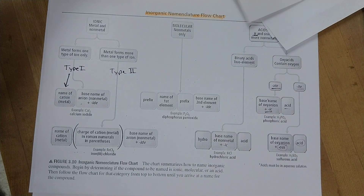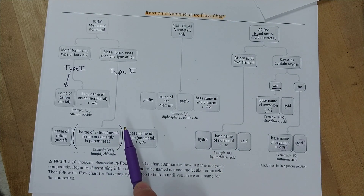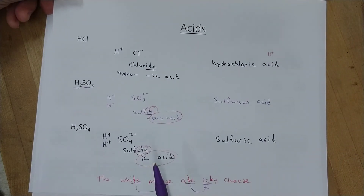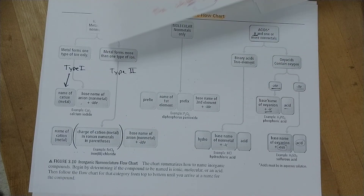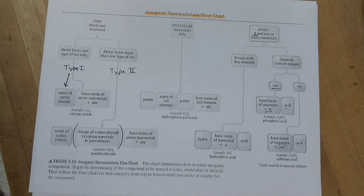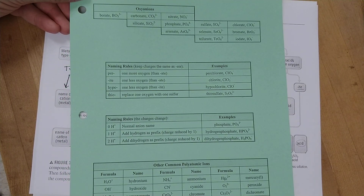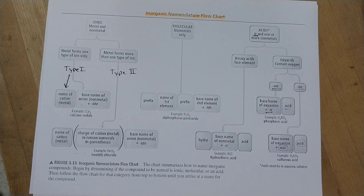That's all of inorganic chemistry naming. The hardest part is remembering the names of the polyatomic ions. So get to that green sheet, memorize those names, and ask in class for shortcuts to help you remember.